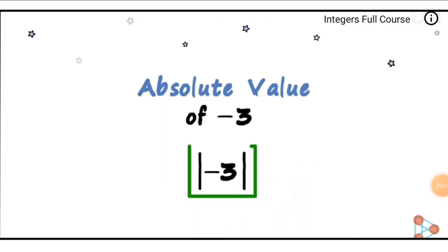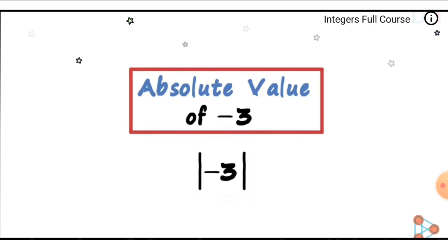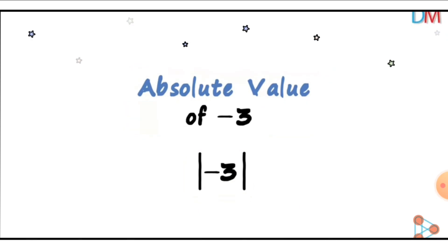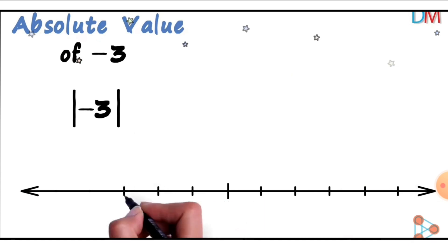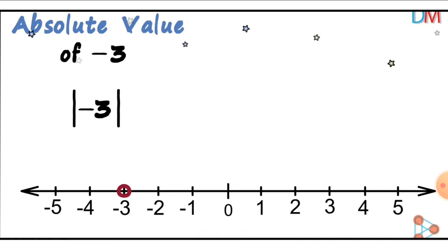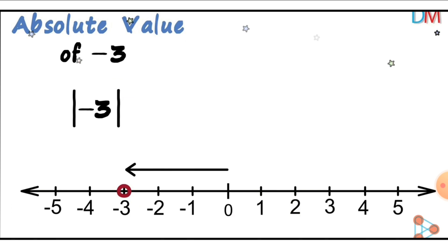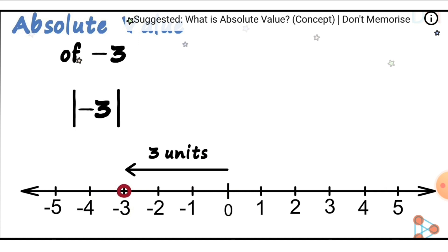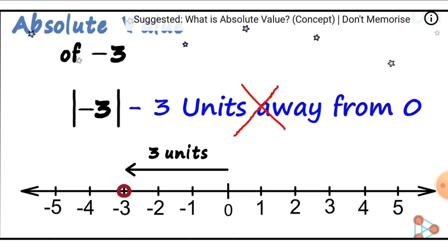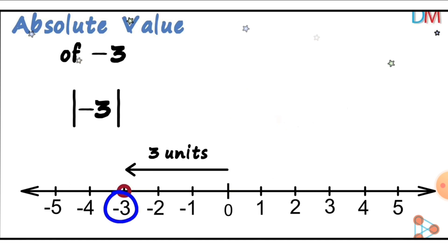Let's try another example: the absolute value of negative three. When we talk about absolute value, that is the distance from zero. Let's count how many units from zero to negative three: one, two, three. There are three units — that's the distance. When we talk about distance, it is always positive. We cannot say negative three units away from zero — it is never negative. So the answer should be positive three.